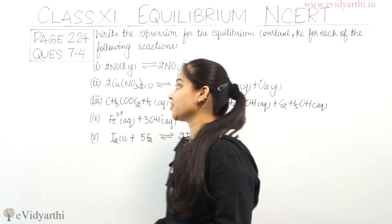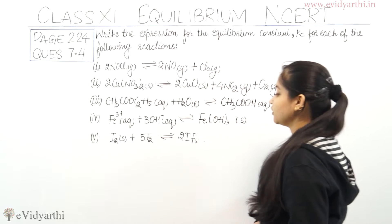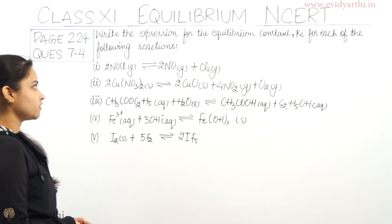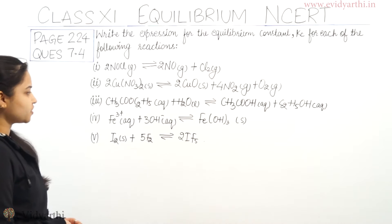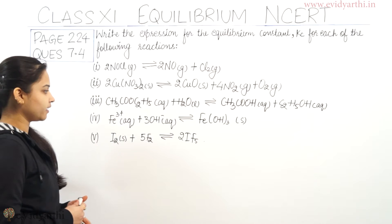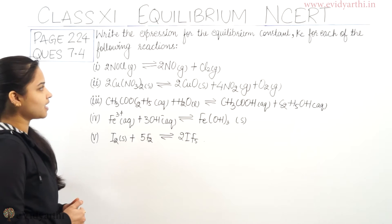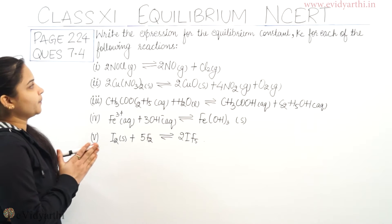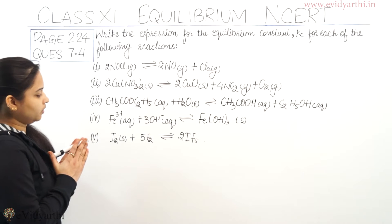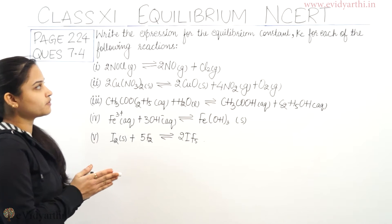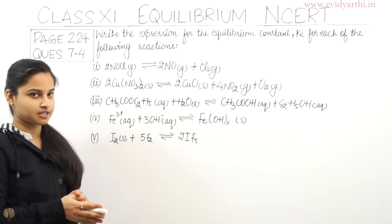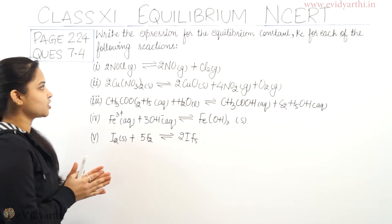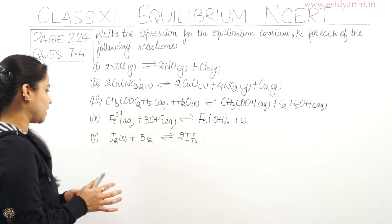So the question is: write the expression for the equilibrium constant Kc for each of the following reactions. These 5 reactions are given to us and we need to express these equations in terms of the equilibrium constant. So let's begin with the solution and solve the first part of the question.